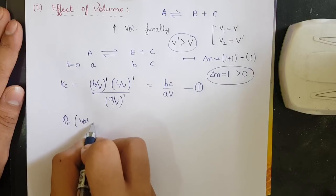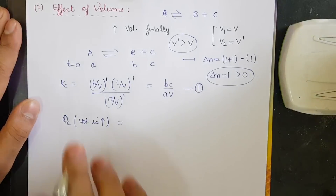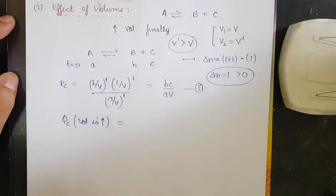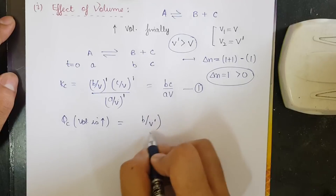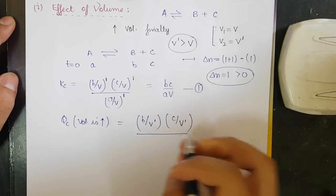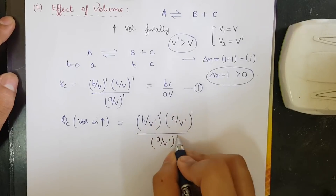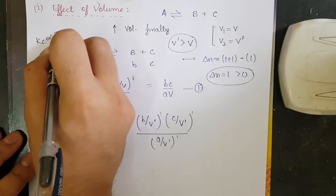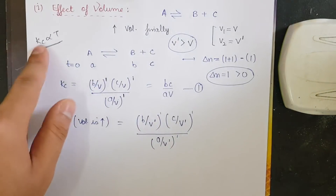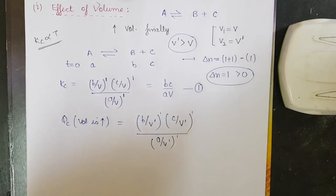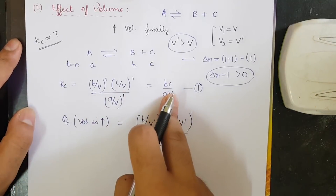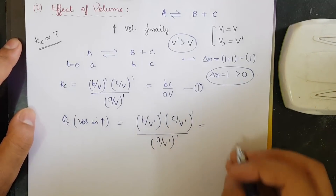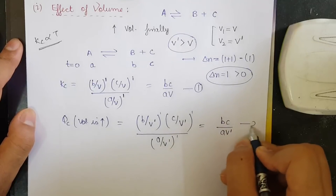Now we find Qc when the volume is increased from V to V'. Qc = (B/V') × (C/V') / (A/V'), which simplifies to Qc = BC / (A·V'). Let this be equation number two. Note that Kc only depends on temperature — changing concentration, volume, or pressure does not affect Kc as long as temperature is constant, but Qc will change.